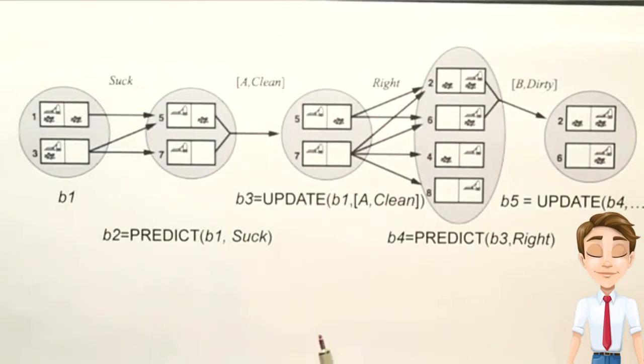Here's an example of tracking the predict update cycle. And this is in a world in which the actions are guaranteed to work as advertised. That is, if you suck, clean up the current location, and if you move right or left, the wheels actually turn and you do move. But we can call this the kindergarten world, because there are little toddlers walking around who can deposit dirt in any location at any time.